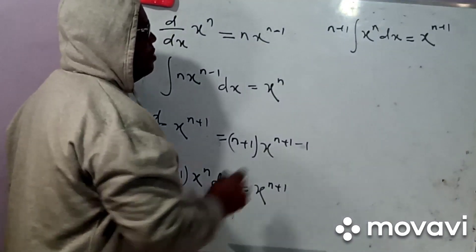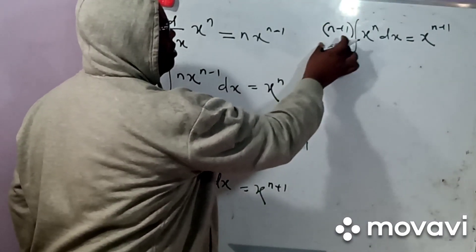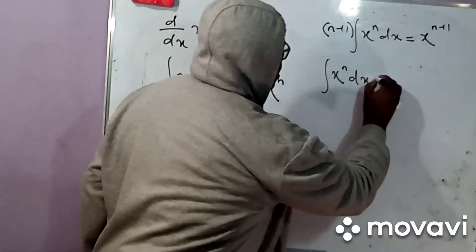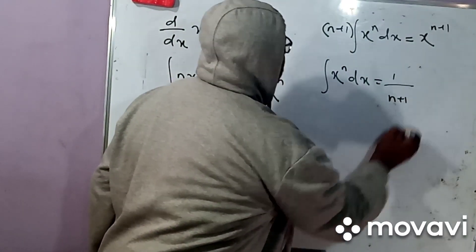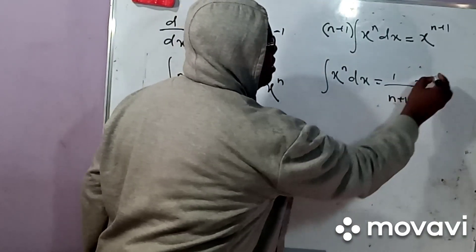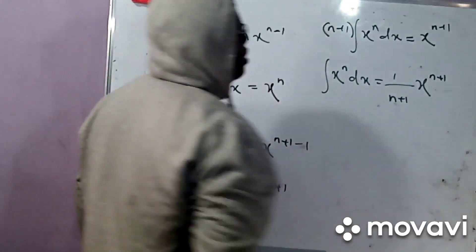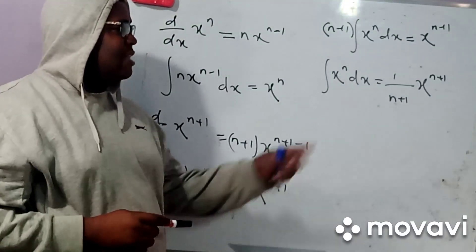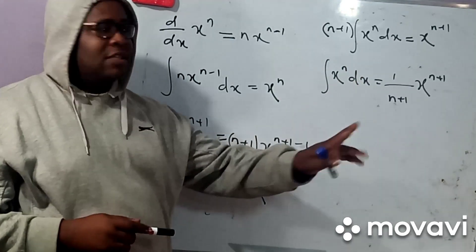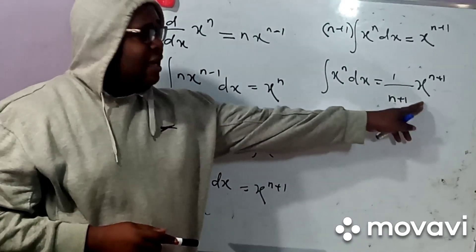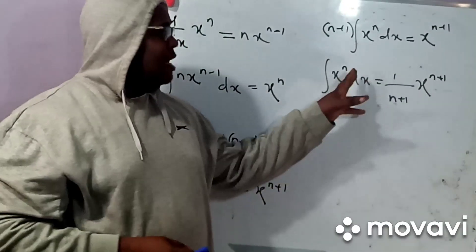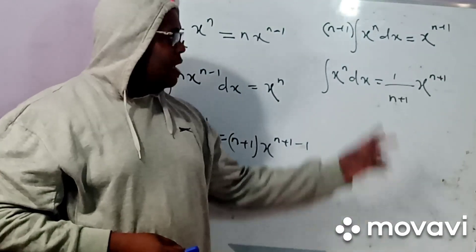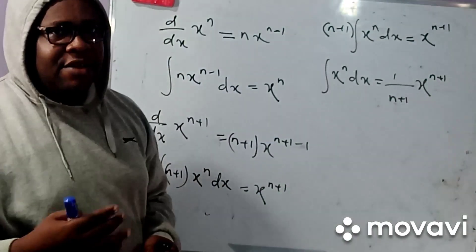Therefore, when you take this factor N plus 1 to the other side, it means that the integral of X to the power N with respect to X simply gives 1 over N plus 1, then X to the power N plus 1 as our answer. So generally speaking, whenever you integrate X to the power N with respect to X, your answer simply becomes 1 over N plus 1 times X to the power N plus 1. In other words, you add 1 to the power and take the reciprocal of the new power — integration increases the power by 1.